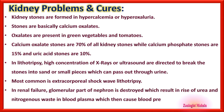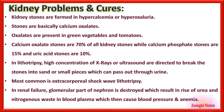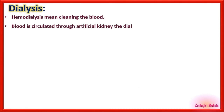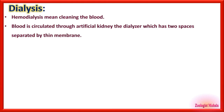In renal failure, the glomerular part of the nephron is destroyed, resulting in a rise of urea and nitrogenous waste in blood, causing high blood pressure and anemia — these are symptoms of kidney failure. Hemodialysis means cleaning the blood; blood is circulated through an artificial kidney called the dialyser, which has two spaces separated by a thin membrane — blood on one side, dialysis fluid on the other.